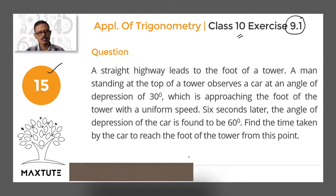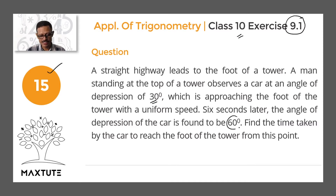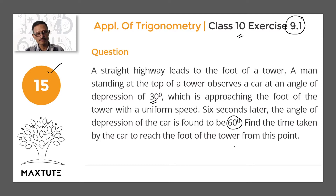A straight highway leads to the foot of a tower. A man standing at the top of the tower observes a car at an angle of depression of 30 degrees. The car is approaching the foot of the tower with a uniform speed. Six seconds later, the angle of depression of the car is found to be 60 degrees — the car is now at a second point, closer to the tower. We need to find the time taken by the car to reach the foot of the tower from the second point.